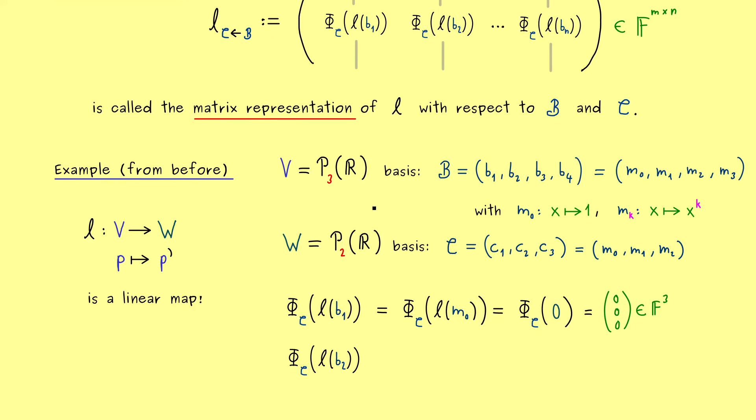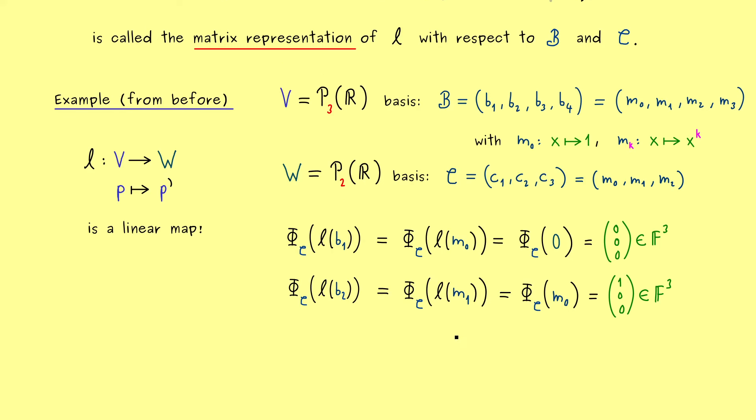Hence, now we can continue to the second column, which means there we have to know the derivative of M1. And as we have learned before, this is simply M0. And now, since this is the first vector in our basis C, phi C will send this vector to the first basis vector in F3. Hence, what we get here is 1, 0, 0. And now you just have to do the same with the third and the fourth column, and then you are finished.